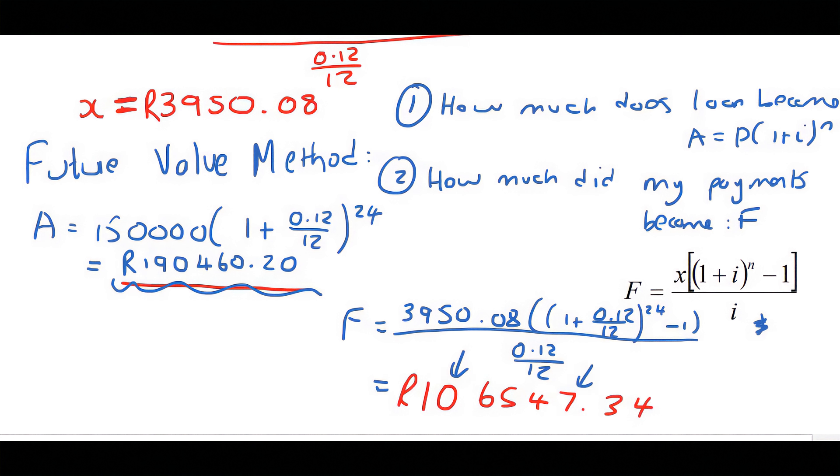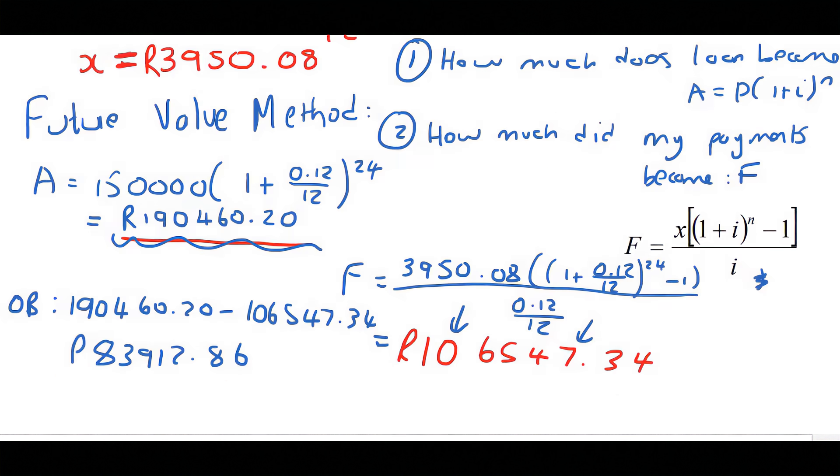So that'll be your outstanding balance. So it'll be 190,460.20 minus 106,547.34. And that gives us 83,912.86.